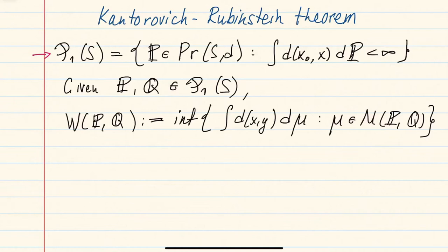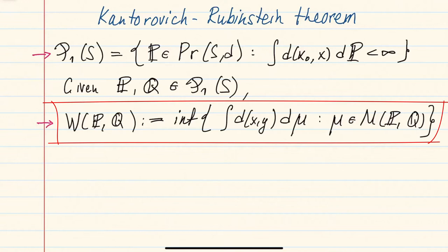Given two probability measures in this subset P1, we defined the Wasserstein distance between them, denoted W, as the infimum of the integral of the distance with respect to measure mu, where the infimum is taken over all measures on the product space S×S with prescribed marginals p and q.